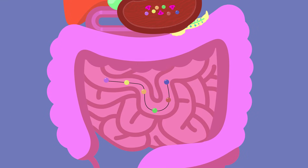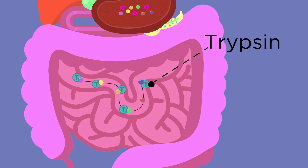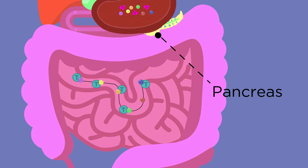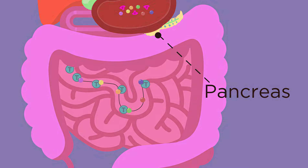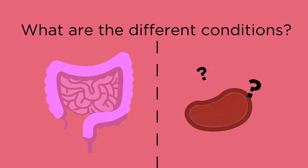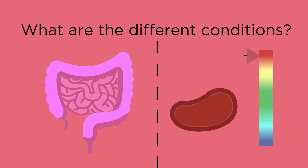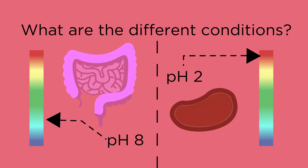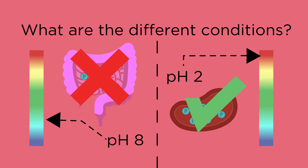In the small intestine, the conditions are different, so a different protease called trypsin is released into the small intestine from the pancreas for continued protein digestion. Whilst the stomach is very acidic and has a pH of about 2, the small intestine has a higher pH of about 8. Protease enzymes which work well at pH 2 don't work at pH 8, which is why different protease enzymes are needed in the small intestine.